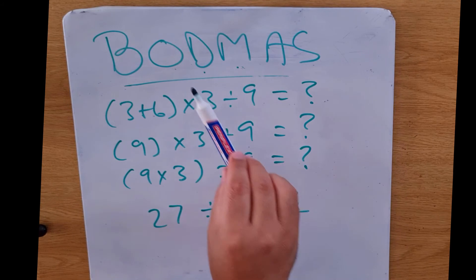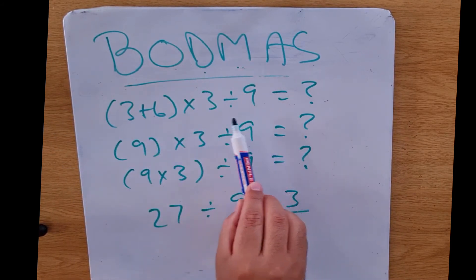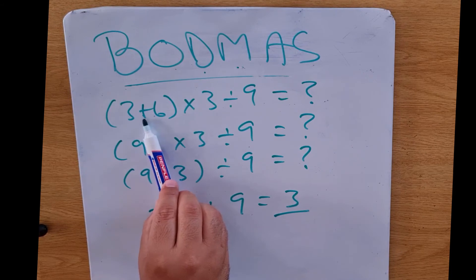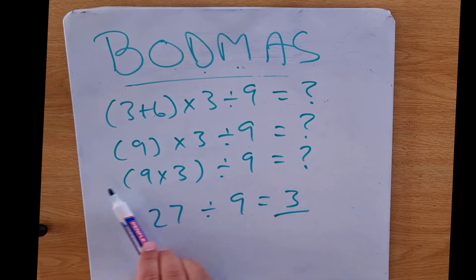So you can see I'm implementing BODMAS from left to right. That is why I'm first doing my bracket. Once I've got my bracket, then I implement the multiplication, and then the last thing from left to right that's there is division.